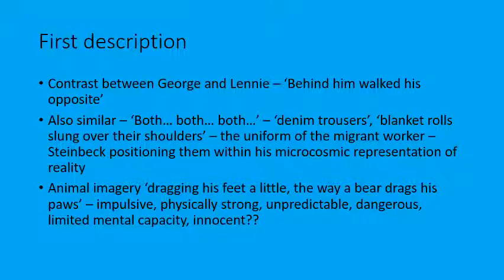Right from the beginning there's animal imagery describing the way Lennie moves. He's linked to various animals during the course of the novel, but at this point it's a bear: 'he was dragging his feet a little the way a bear drags his paws.' It's worth looking at the different moments where this animal imagery is used — there are lots of them — but not just noting it in an essay; you've got to think about what Steinbeck is trying to show through that, because it will vary depending on the description and context.